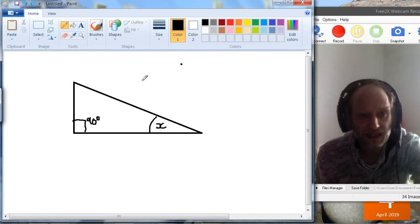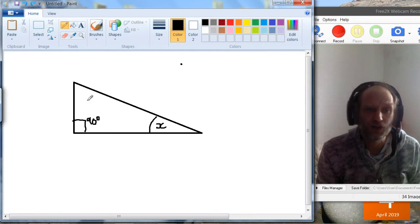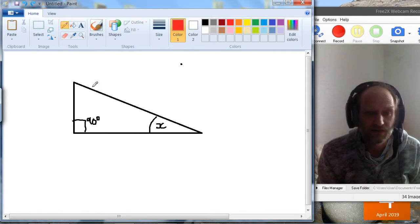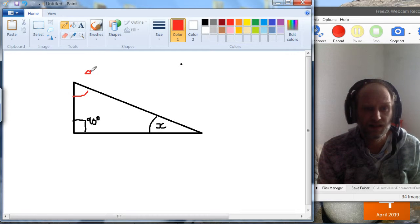So if you notice, if we know that one of the angles is 90 and we know this other angle x, then we also know this angle.